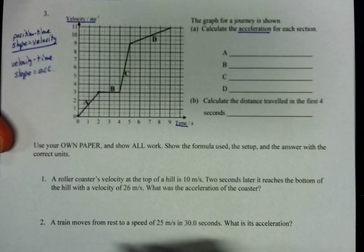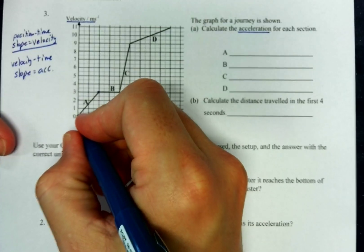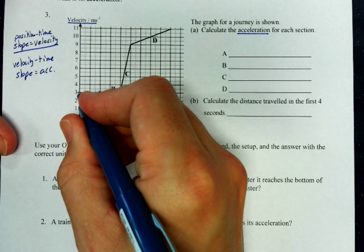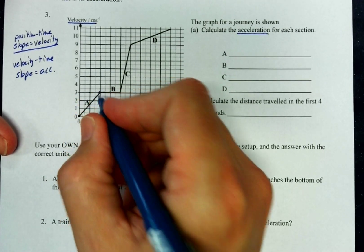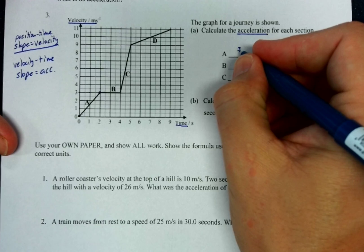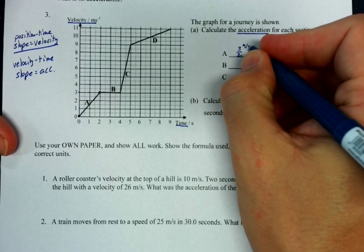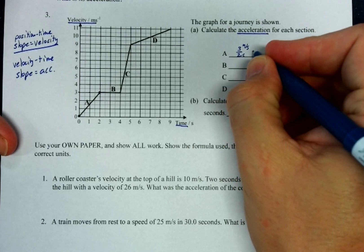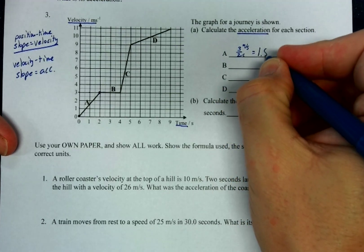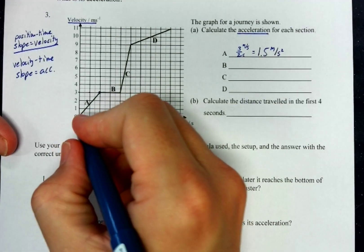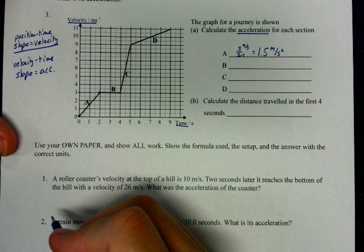The first one here asks us to calculate the acceleration for each section. So section A goes from here to there. Now acceleration is the final velocity minus the initial velocity divided by time. That is the same thing as final minus initial, that would give you the rise divided by the time, which is the run.